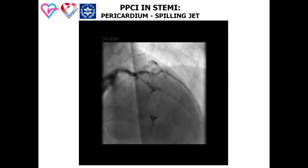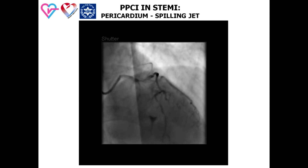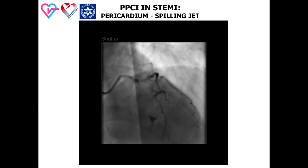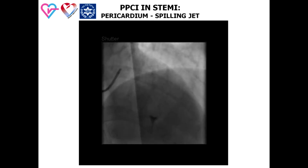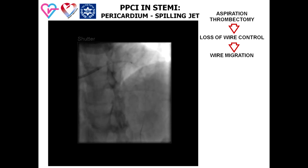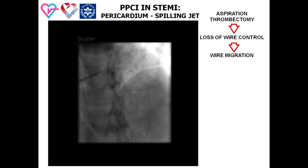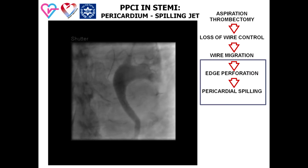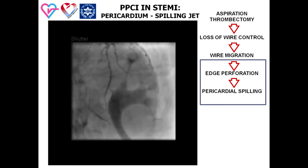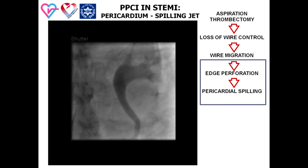This is a case of primary PCI to a thrombus-containing LAD lesion with TIMI-1 flow. A hydrophilic guide wire was used and aspiration thrombectomy was performed. Pericardial spilling can be seen as a result of distal migration of the wire during aspiration thrombectomy.